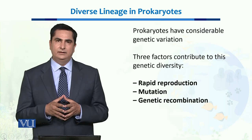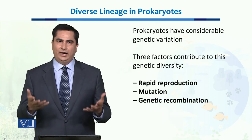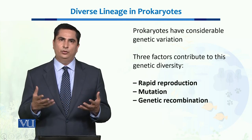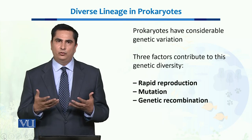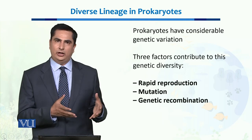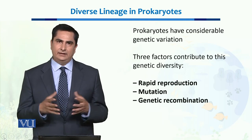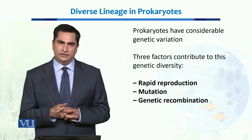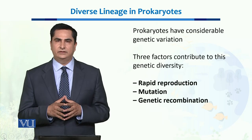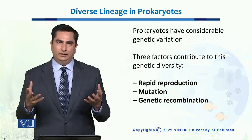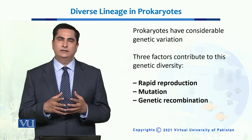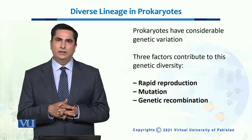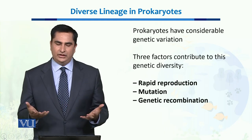The second factor is mutations. When bacteria divide, their DNA divides and they don't have any repair mechanisms, so there are more chances of mutation compared to eukaryotic cells, which leads to genetic diversity among them. The third factor is genetic recombination — when two different bacteria unite, they lead to a genetic recombination, which leads to genetic variations and thus helps them in their diverse lineage.